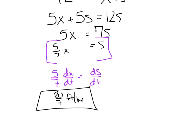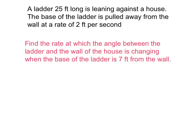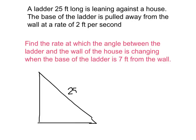It doesn't matter how far he is from the lamppost — the shadow is changing at a constant rate. Now let's dive into our first angle problem. A ladder 25 feet long is leaning against a house. I'll stop and draw that. I'm going to label my sides A, B, and C, so C is 25 feet. The base of the ladder is pulled away from the house at a rate of 2 feet per second, so db/dt equals positive 2 feet per second.